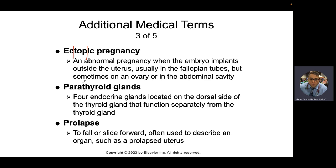Parathyroid glands — the gland alongside the thyroid. 'Para' means along the side of, like paramilitary, which is not the official military but something alongside it. Prolapse — 'pro' means before. We talked about prolapse regarding a multigravid mother, someone like G6 P6, who can have a herniation of the vaginal canal or rectum — rectal prolapse or vaginal prolapse, also known as a rectocele or colpocele if vaginal.